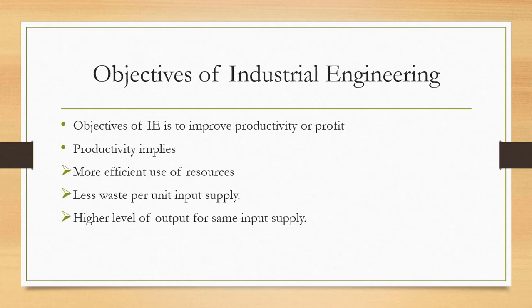Productivity means we are going to design a system in such a way that it will utilize resources in a more effective way. Productivity also implies less wastage per unit input supply. There are two kinds of wastage in industry: wastage of material and wastage of time. We will study certain techniques of industrial engineering to reduce both. Additionally, productivity implies a higher level of output for the same input supply — using the same resources but utilizing them in such a way that our production rate and quality of product are improved.